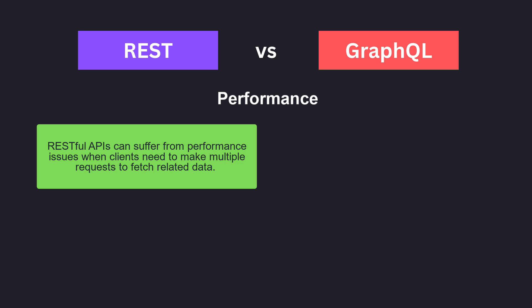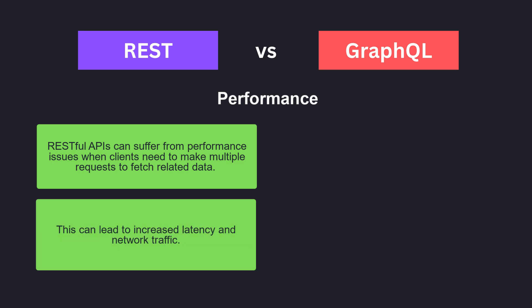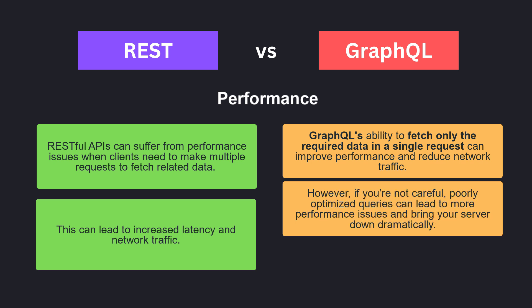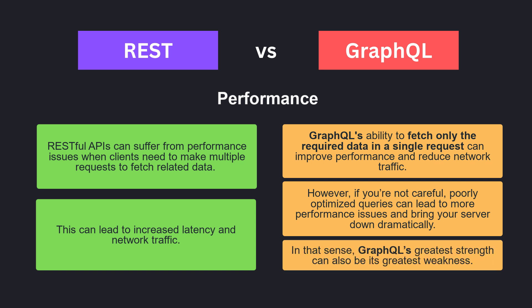Based on performance, RESTful APIs can suffer from performance issues when clients need to make multiple requests to fetch related data, leading to increased latency and network traffic. GraphQL's ability to fetch only the required data in a single request can improve performance and reduce network traffic. However, if you are not careful, poorly optimized queries can lead to more performance issues and bring your server down dramatically. In that sense, GraphQL's greatest strength can also be its greatest weakness.